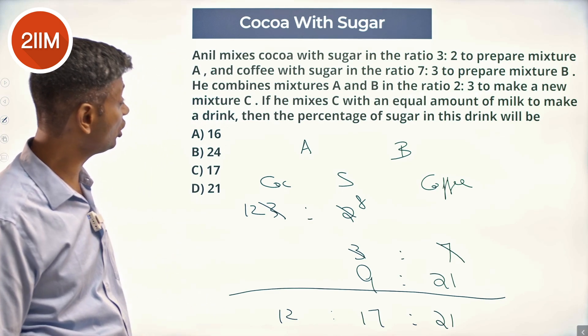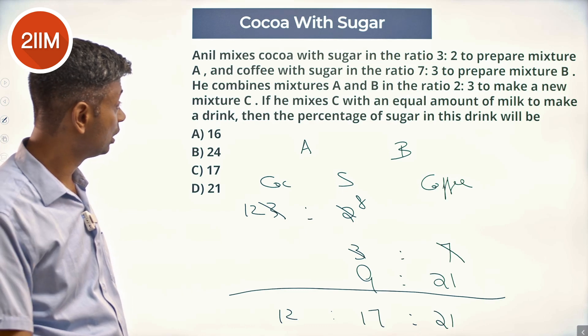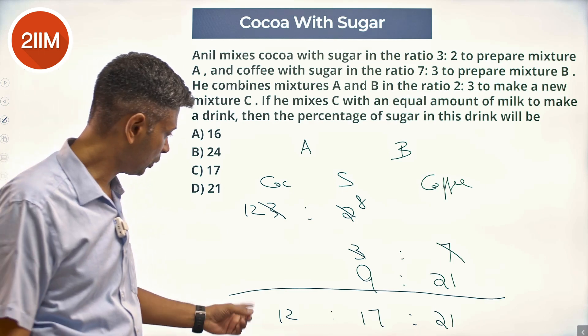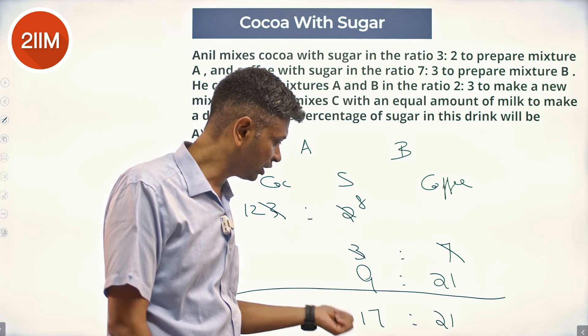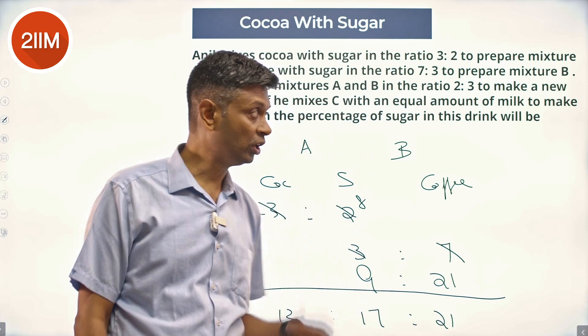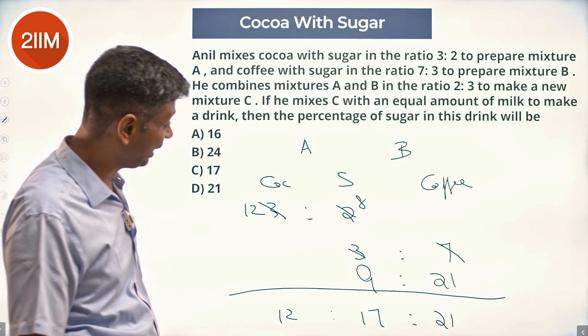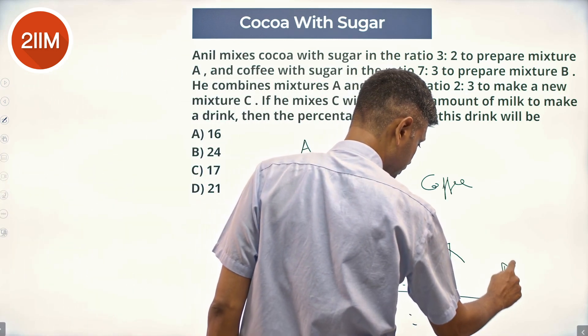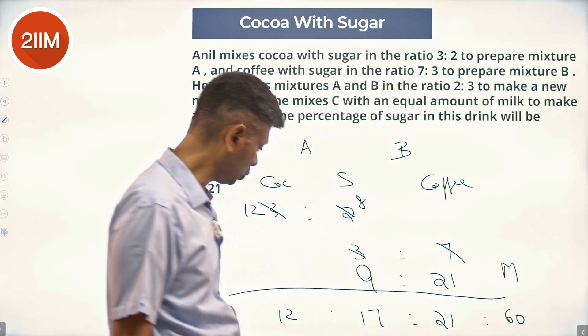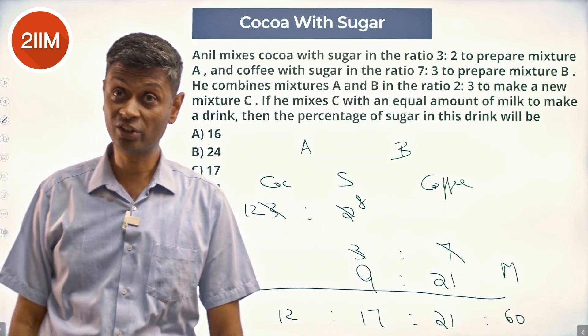He mixes C with an equal amount of milk to make a drink. 12, 17, 21. 12 plus 17 is 29, 29 plus 21 is 50. And he mixes equal amount of milk. So he adds milk which will be 50. 12, 17, 21, 50.